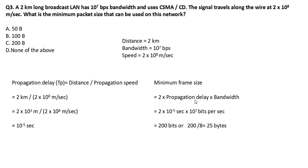Minimum frame size = 2 × propagation delay × bandwidth = 2 × 10^(-5) × 10^7 = 2 × 10^(7-5) = 2 × 10^2 = 200 bits. Since the answer is needed in bytes and 1 byte = 8 bits, we divide: 200 / 8 = 25 bytes. But since 25 bytes is not among the listed options, the answer is none of the above.